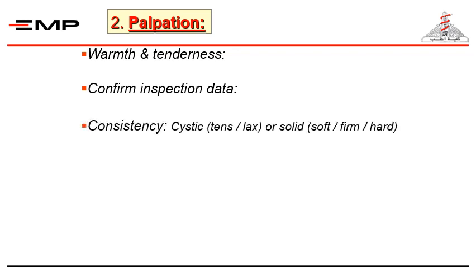It is very important to judge the consistency and decide whether the swelling is cystic or solid. If cystic, whether it is tense cystic or lax cystic; and if solid, whether it is soft, firm, or hard. The clinical demonstration will explain the clinical assessment of swelling consistency, including the cross-fluctuation test, badger test, tapping for fluid thrill, translucency, and other tests. Be ready to watch this and practice it in your clinical session.